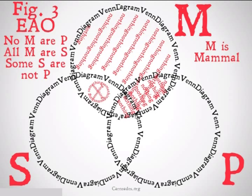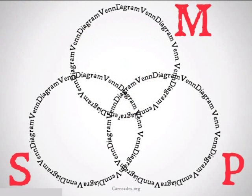If we look at the argument, we find out that M means mammal. Mammals exist, so this is going to be a valid argument.